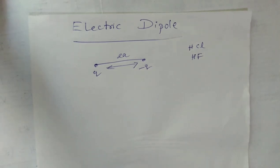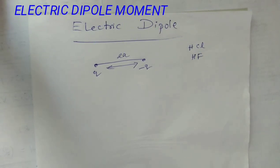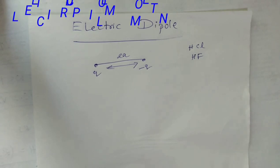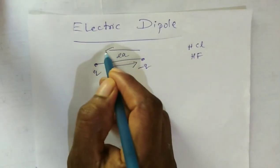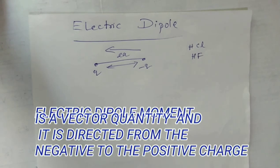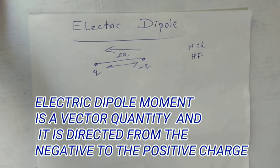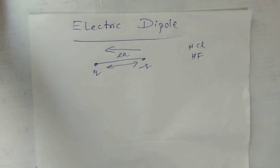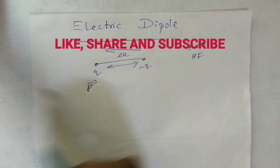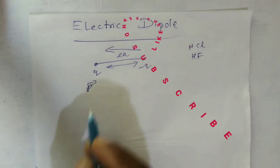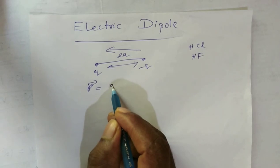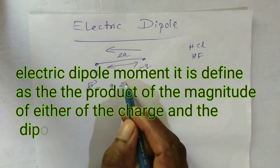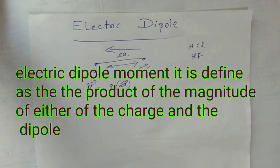There is always a question: why is the electric dipole moment always in the direction from negative to positive? I am going to explain mathematically why the electric dipole moment is always from negative to positive. The dipole moment is a vector quantity denoted by p.